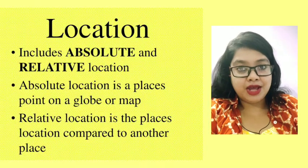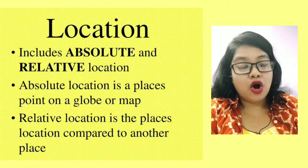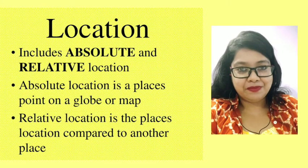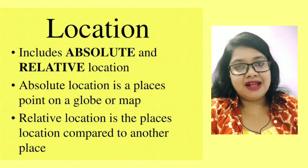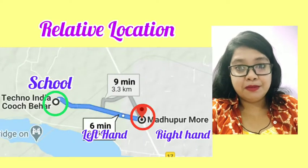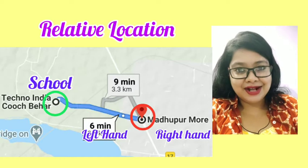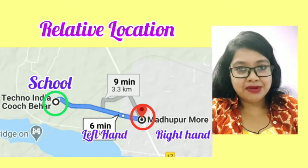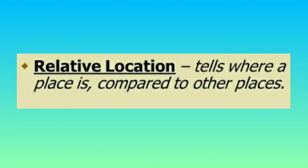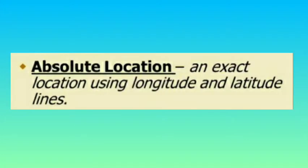In terms of location, we can divide it into two different subtypes. The first is relative location and the second is absolute location. Relative location is when we talk about a particular location in reference to other locations. For example, if you want to describe the location of your school, you might say: 'My school is near the Madhupur moor — if you cross Madhupur moor on the left-hand side, walk a little, and the school will be on the right-hand side.' So when describing a location in relation to some other reference point, we call it a relative location.